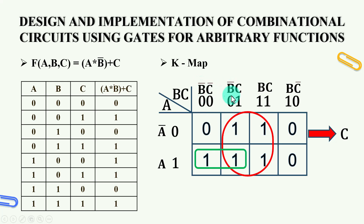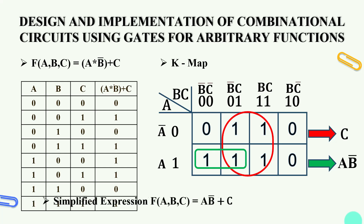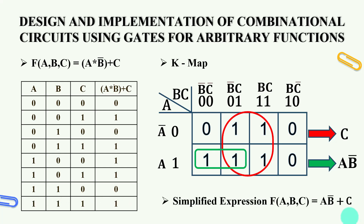From the truth table values and K-map grouping, the simplified equation is A·B̄ + C. So the simplified expression is f(A,B,C) = AB̄ + C.